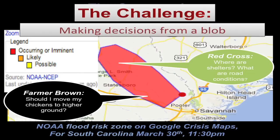But the problem is sometimes this information is too coarse to make a good decision. What you're seeing here is a red blob of a flood risk zone for South Carolina. It might be hard for a farmer who lives here to make a decision about whether or not he should evacuate his animals.